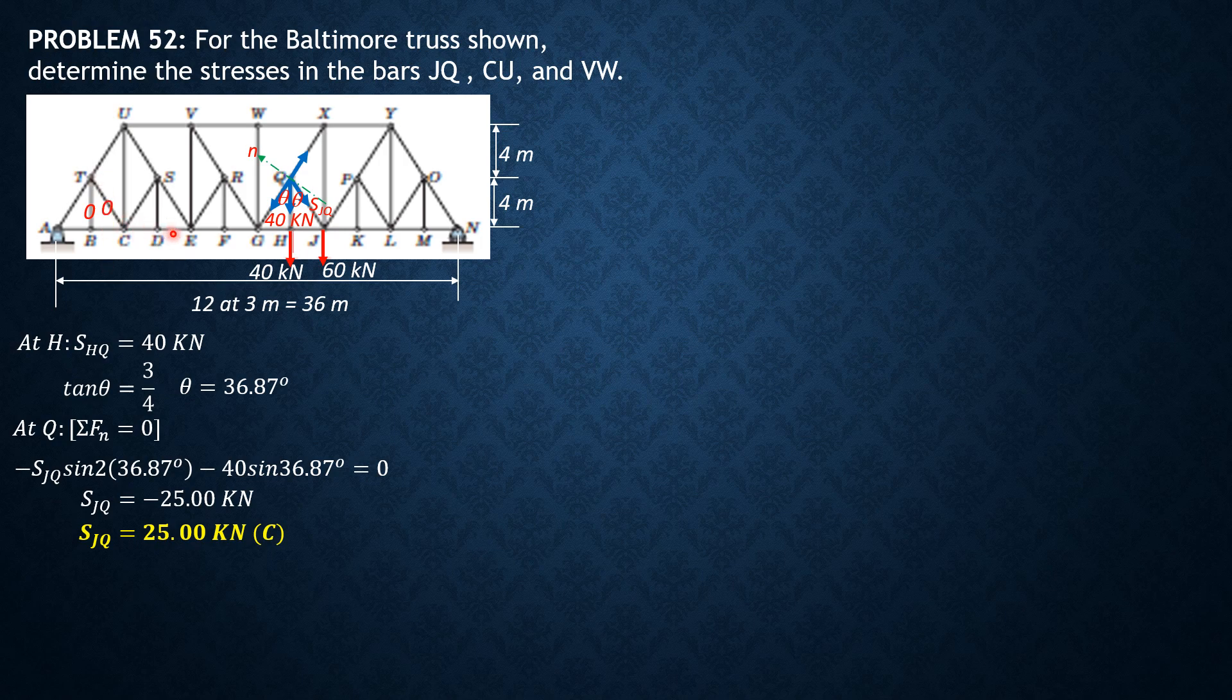Then at joint D, 2 members are collinear. DS is unique. Then summation versus Y, this is a 0 force member, DS. We proceed to joint S. There are originally 4 members attached to this joint, but because this is 0, imagine there are only 3. Then CS is a unique member. Therefore, CS is 0.